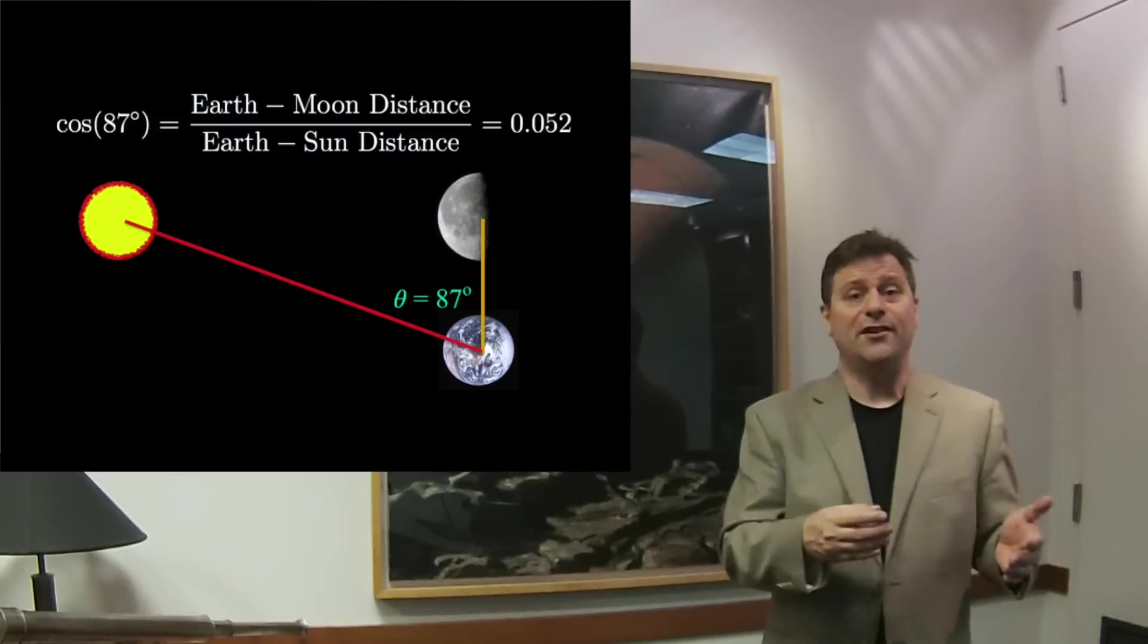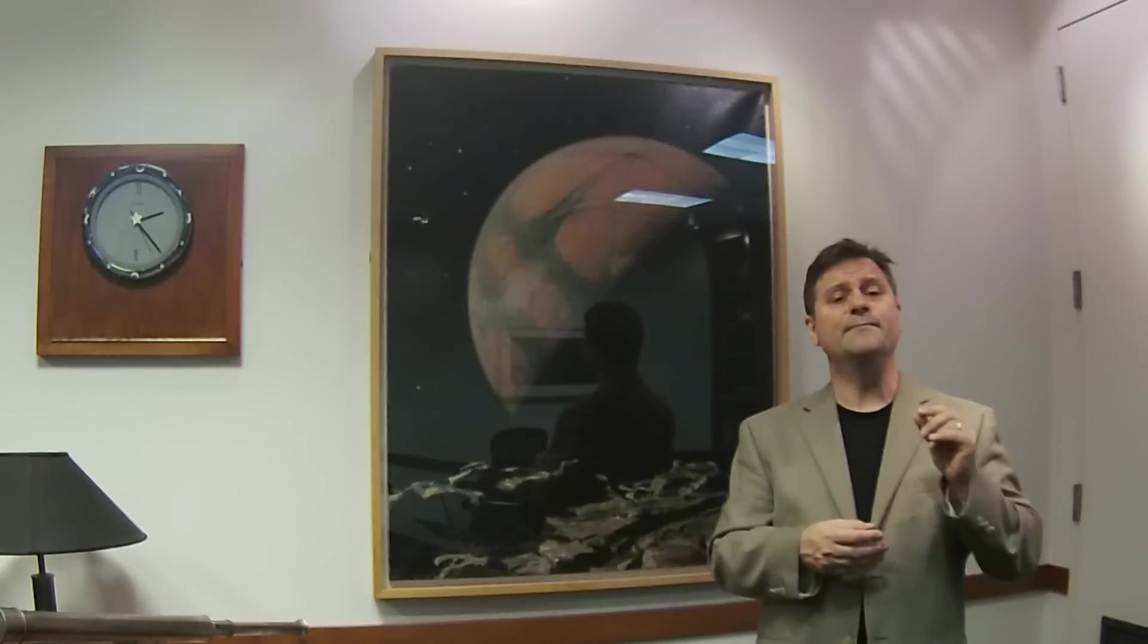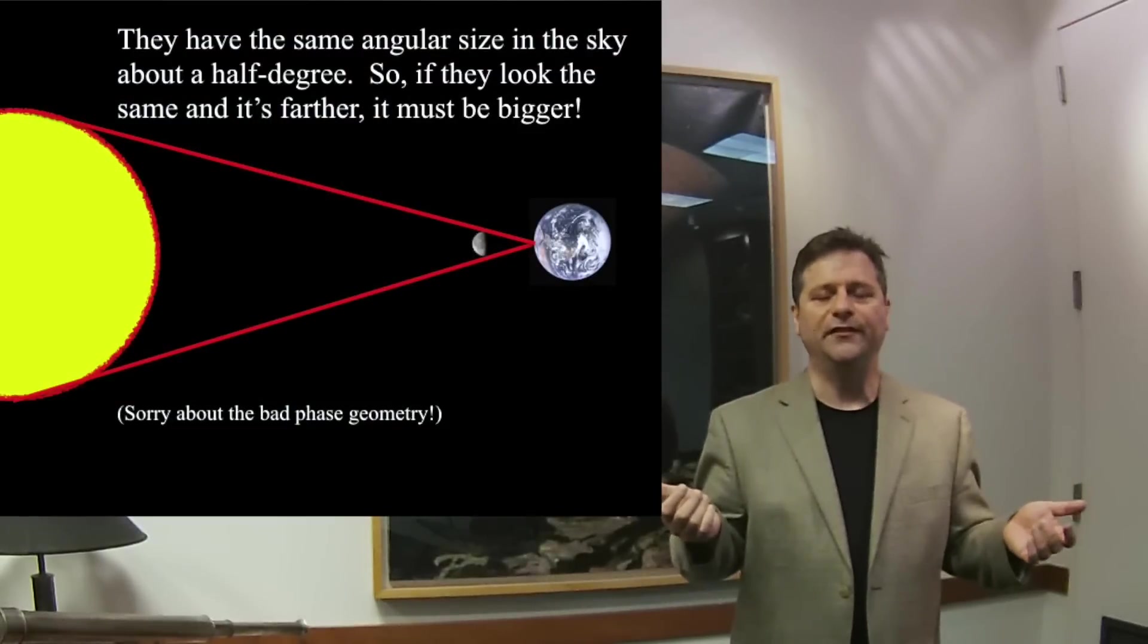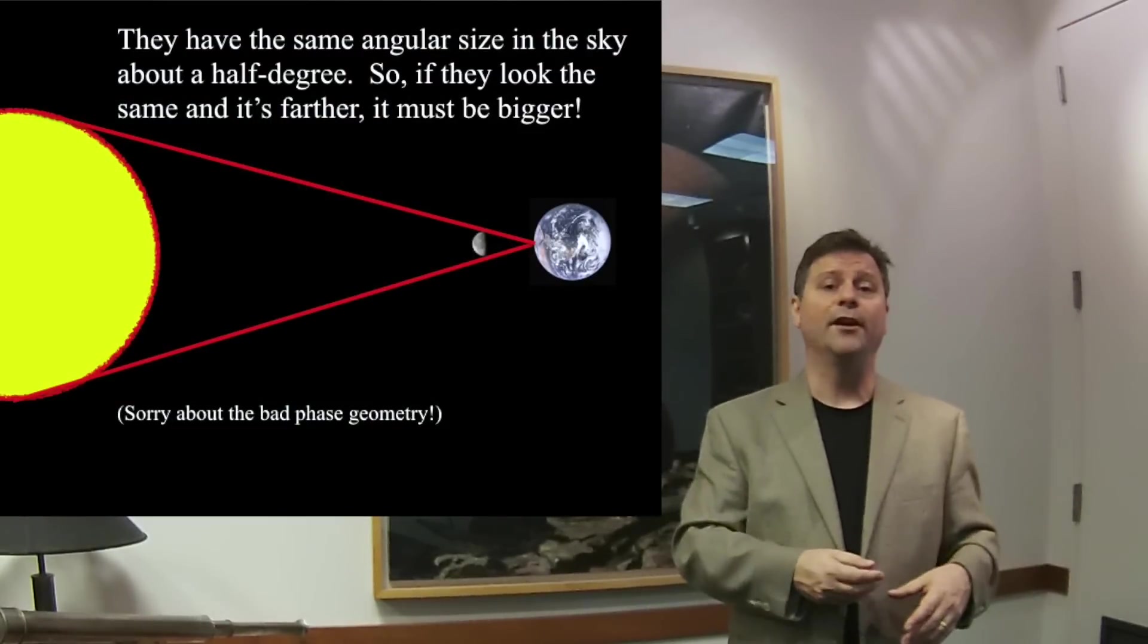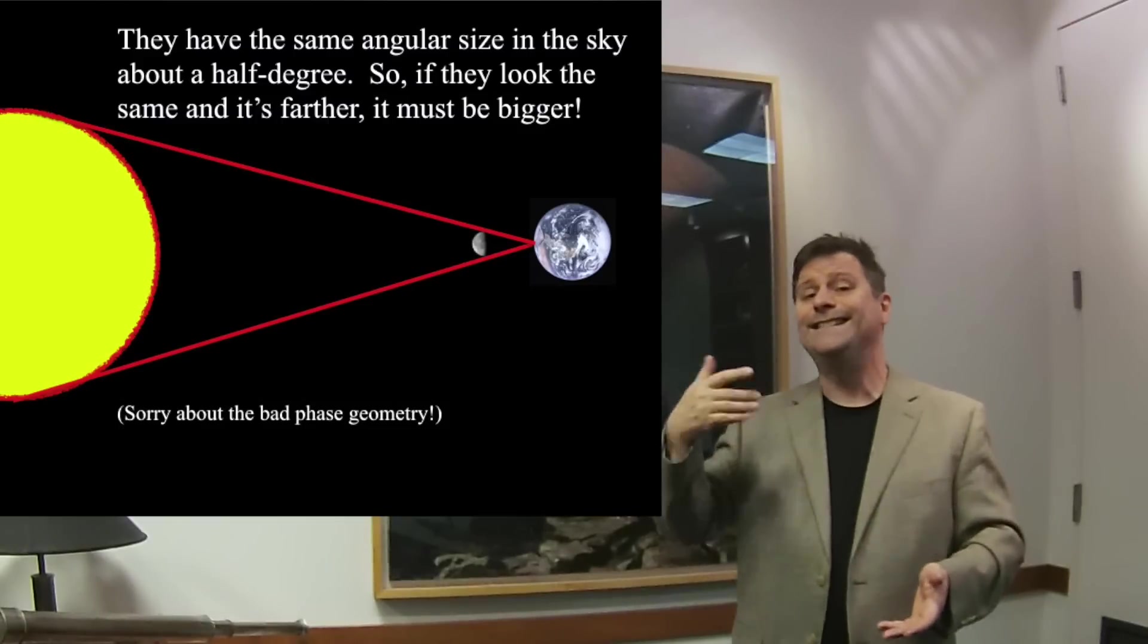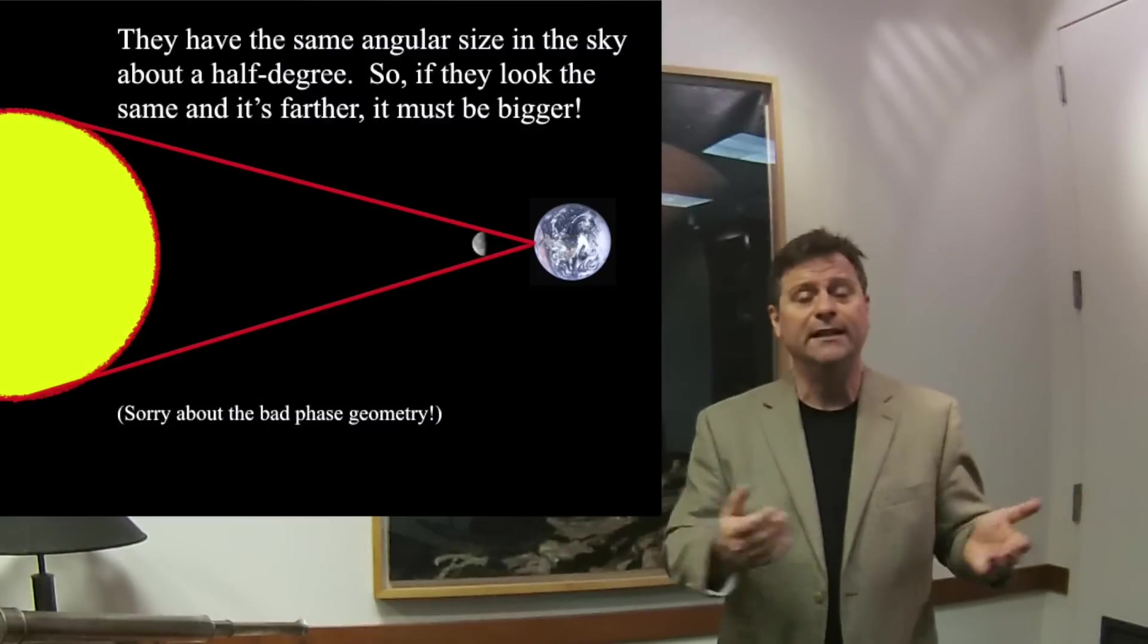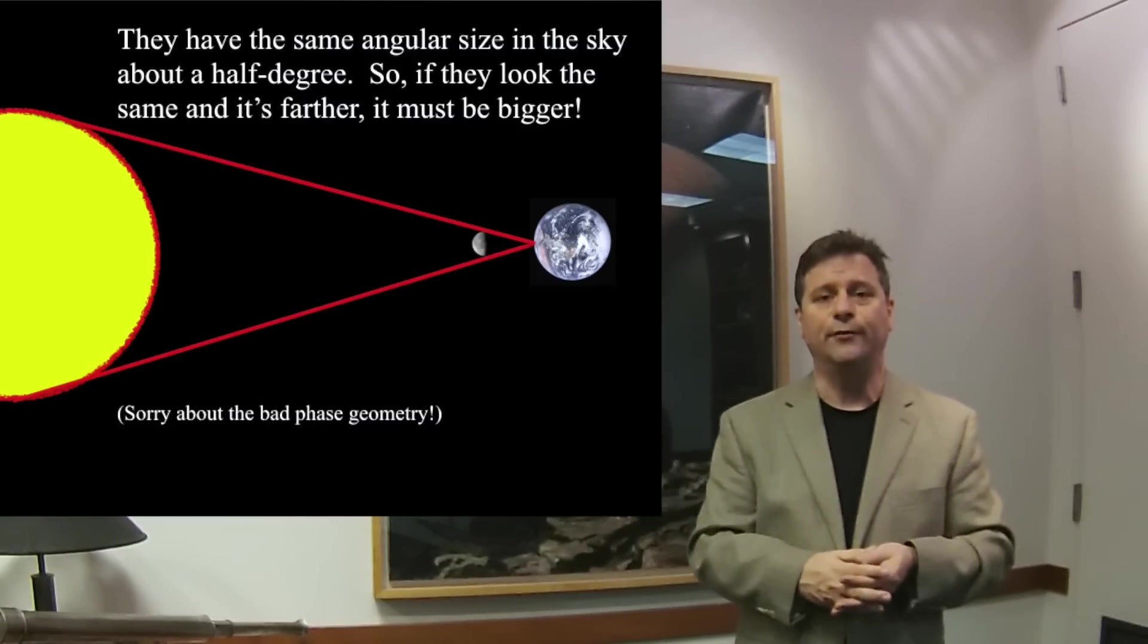So Aristarchus found out something very important. He found out that the sun is much, much further than the moon. Now he can also turn this around and say, wait a second, if we look in the sky and we look at the moon and the sun, they look to be the same size in the sky. So therefore, if the sun is 19 times further than the moon, it has to be 19 times bigger. So that's the nature of angular things that subtend angles across the sky.